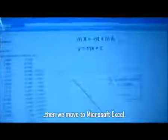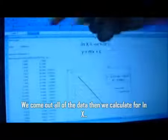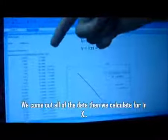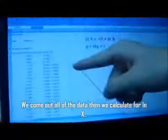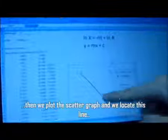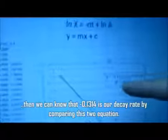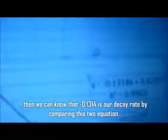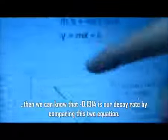Then we move to Microsoft Excel and it will form all the data. And we calculate for ln S. Then plot a scatter graph. Then we will get this kind of line and we will also form this equation when we add trendline. Then we can know that negative 0.1314 is our decay rate compared to these two equations.